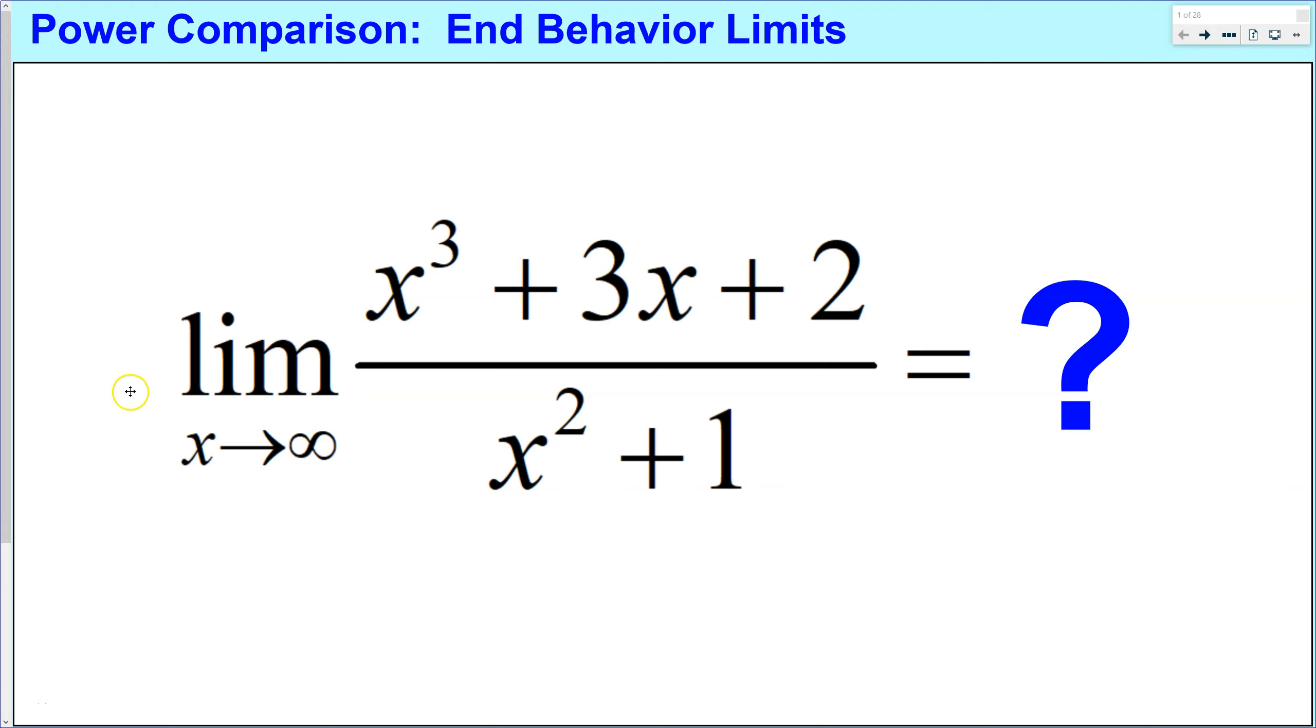So you see down here in this limit symbol, as x approaches infinity, we're not going towards a specific value anymore. We're just saying when x gets very large. And we could do this to the left side or the right-hand side, but as x gets very large, what is this function doing? Now this is something we've actually dealt with before, so it might look familiar.